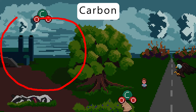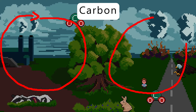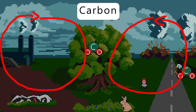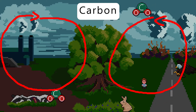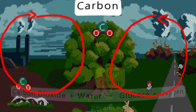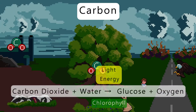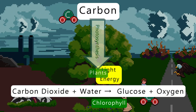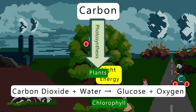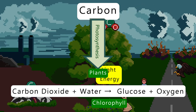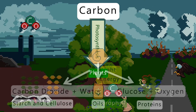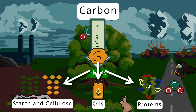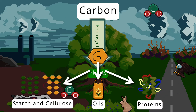The carbon cycle describes how carbon is incorporated into living organisms and then released again. Starting with plants, they photosynthesize and carbon is captured from the atmosphere and converted into glucose, and then converted into other products that all contain carbon atoms.